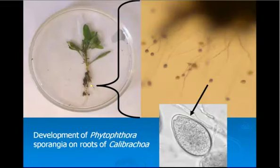One of the ways we diagnose Pythium or Phytophthora in the diagnostic lab is to take a piece of infected tissue, put it in water, and see what grows out. In 24 hours, if Pythium or Phytophthora are present, they'll produce their sporangia in the water. Here with a calibrachoa plant, look at all the sporangia produced on a small piece of root. Each sporangium will produce 20 or 30 swimming zoospores — many more zoospores than oospores from the same small piece of root.